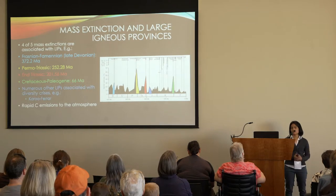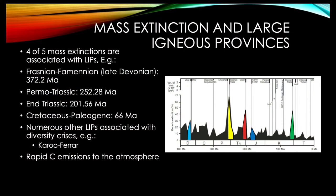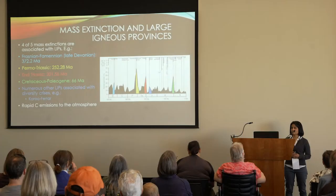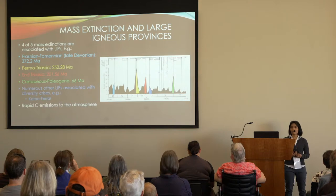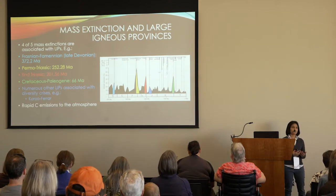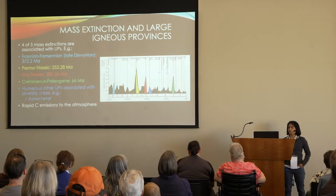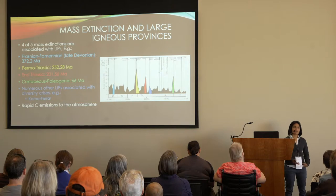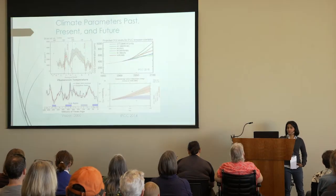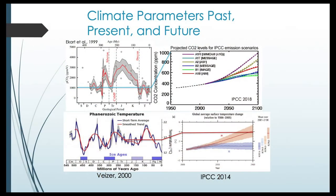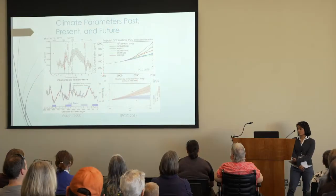Other diversity crises throughout Earth's history are also associated with large igneous provinces, like the Karoo large igneous province in South Africa. Basically all of these massive volcanism events emitted rapid amounts of carbon to the atmosphere and caused greenhouse warming. So why do we care about these massive climatic events that occurred in Earth's deep history, millions of years ago?